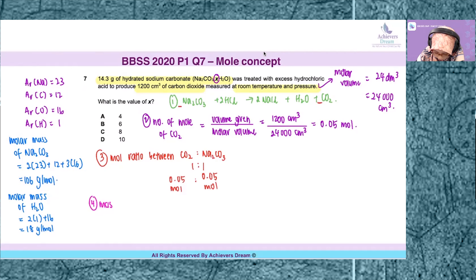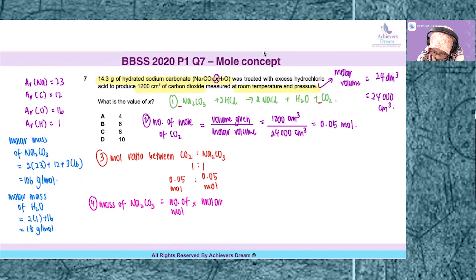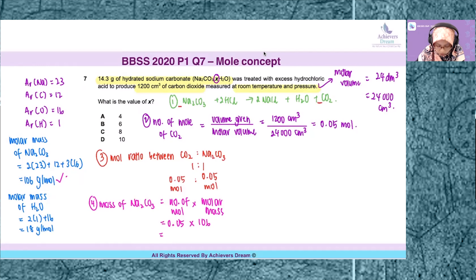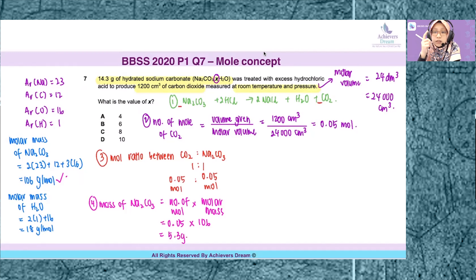Now with 0.05 moles of sodium carbonate, the next step is to find the mass of sodium carbonate. We take the number of moles multiplied by its molar mass: 0.05 times 106 gives us 5.3 grams.